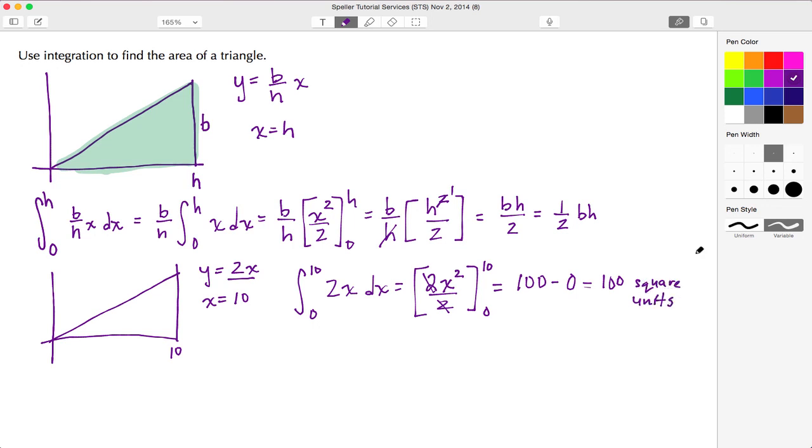And again if I were to do this without calculus and integration, if this length here is 10 that length there is 20. I know my formula is area equals one half the base times the height. Well the base I'm going to say is 10, the height is 20, so if I take one half of 200 I still come out with 100.